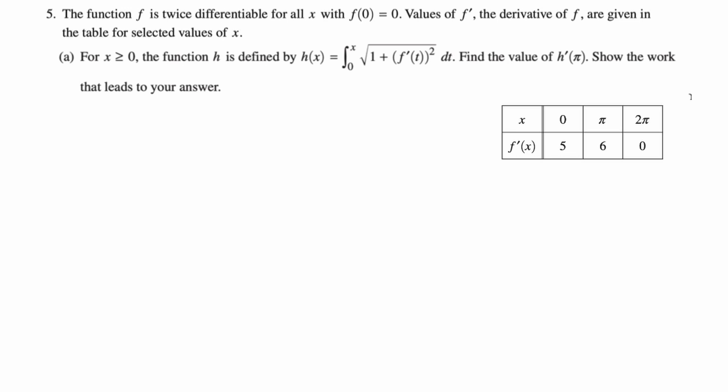h prime is second fundamental theorem, so you're going to take the upper bound, substitute it in for t, and then multiply by the derivative of the upper bound. That gives us h prime is the square root of 1 plus f prime of x squared times 1, but we don't really need to write that.